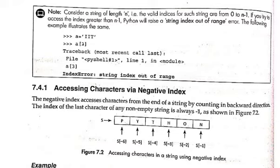Note: If A equals 'IIT' with three characters, the index should be zero, one, two. But A of three tries to access a fourth character when there are only three characters. This produces an index error: string index out of range.